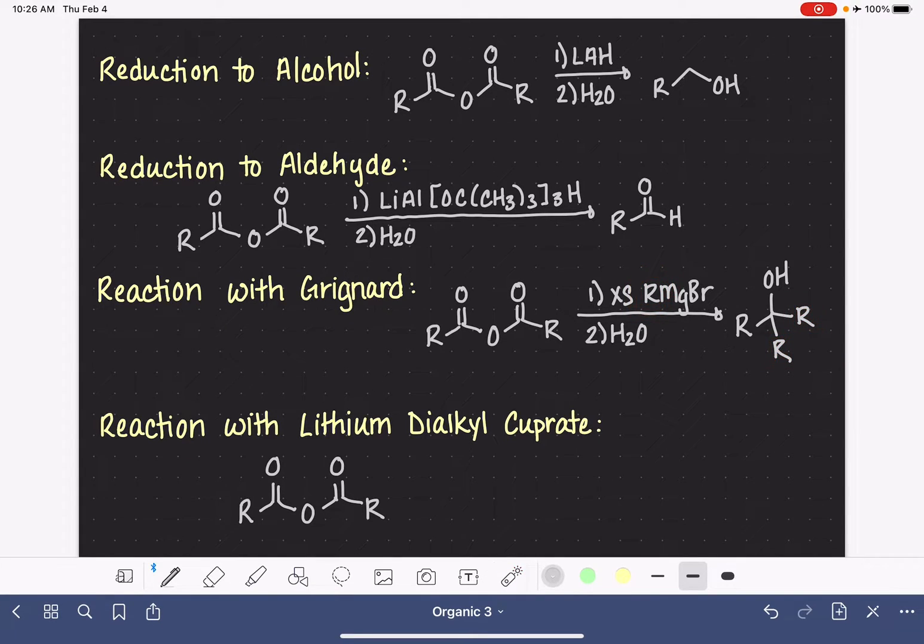And then last but not least, we can do a reaction with lithium dialkyl cuprate, R2CuLi. This produces a ketone using one of the alkyl groups from the lithium dialkyl cuprate. So one of these alkyl groups ends up right here on our product.